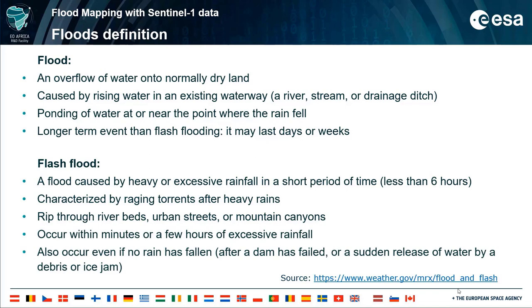Flash floods can occur within minutes or a few hours of excessive rainfall. They can also occur even if no rainfall has fallen — for instance, after a levee or dam has failed, or after a sudden release of water by a debris or ice jam.